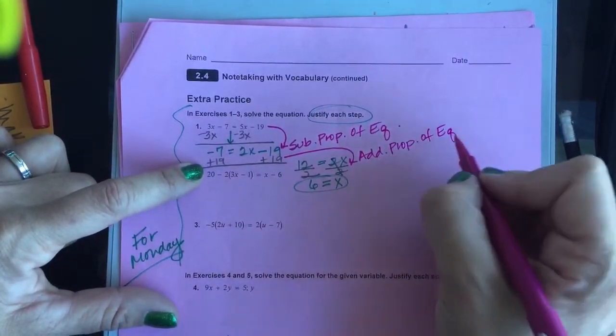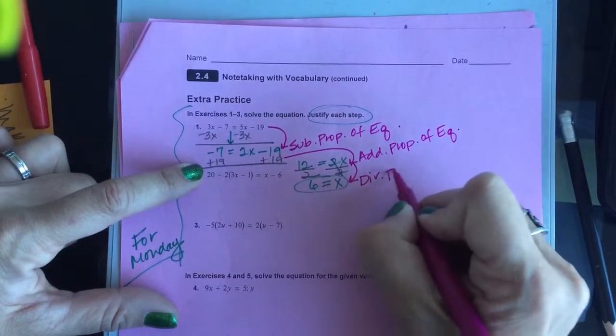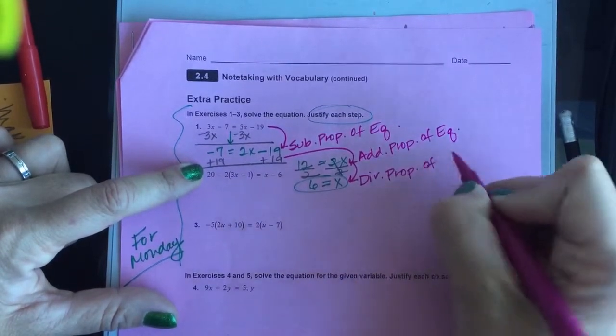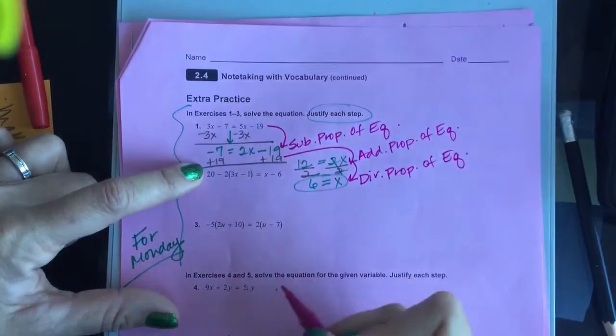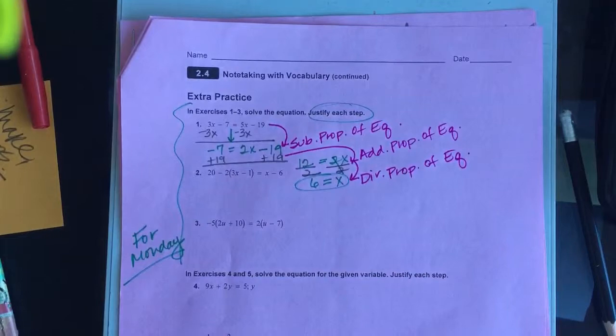Well, I'm abbreviating. And then when I went from here, I used the division property of equality. So the solving is experiences that you've had before. It's the justifying that's going to be new for you.